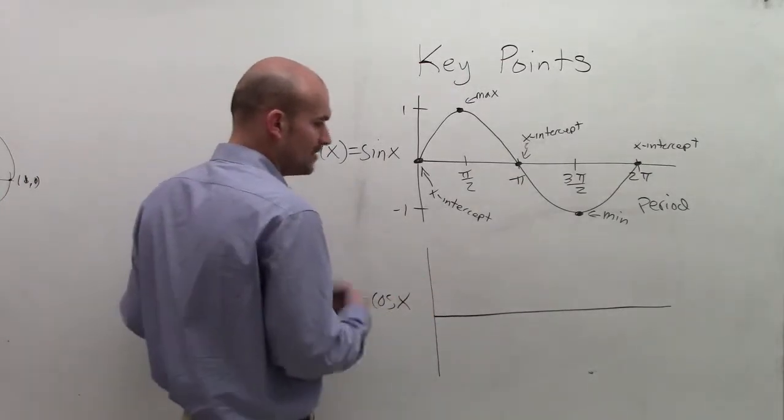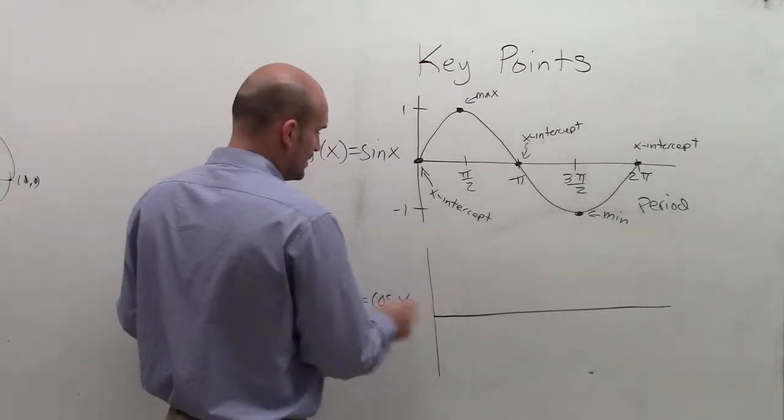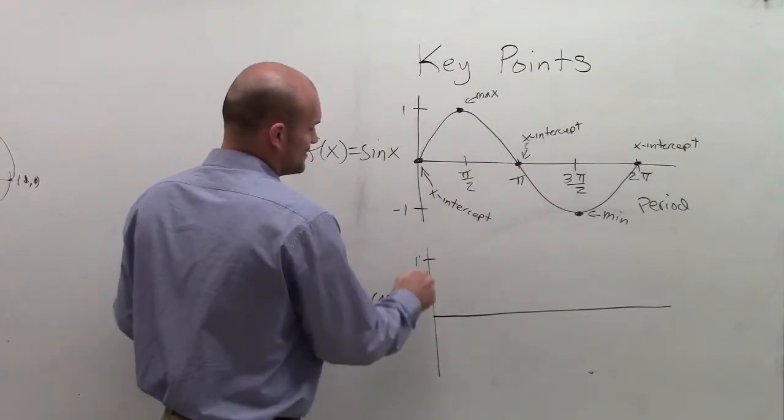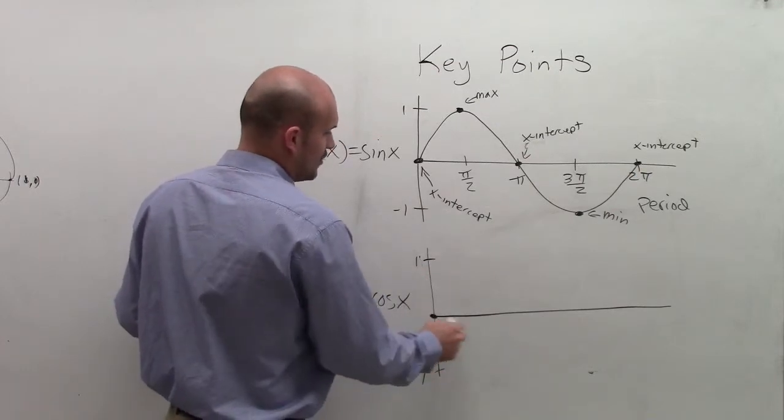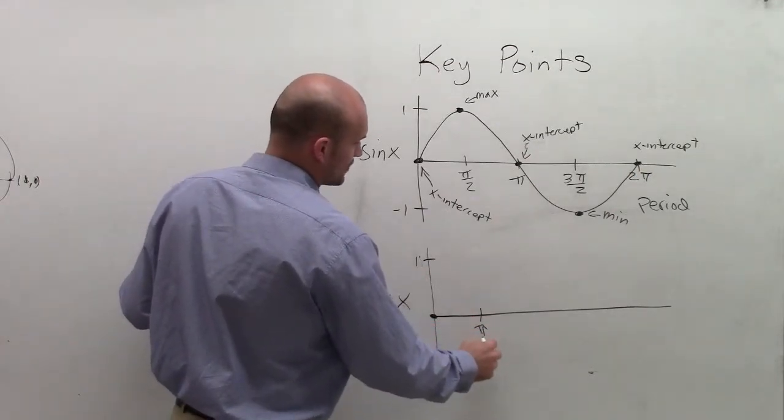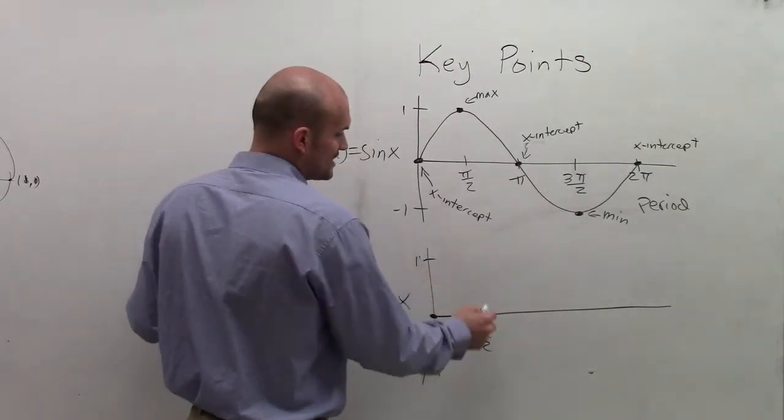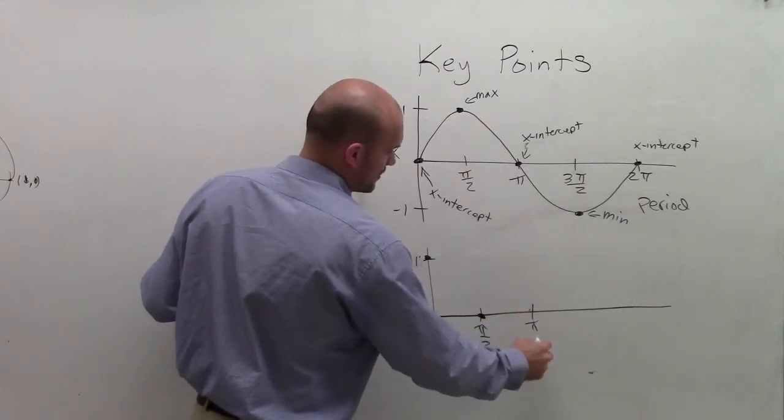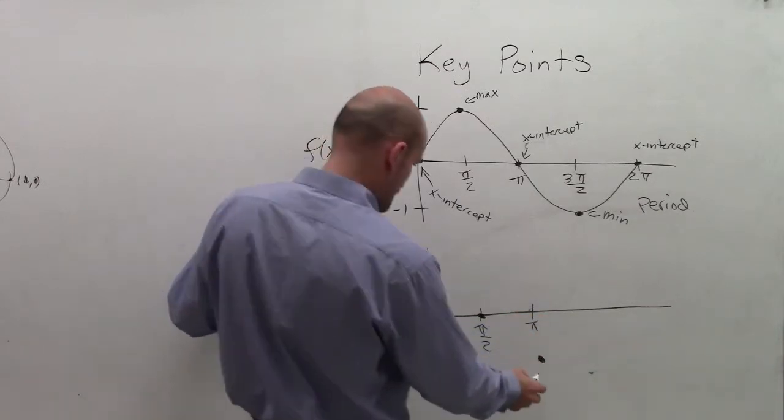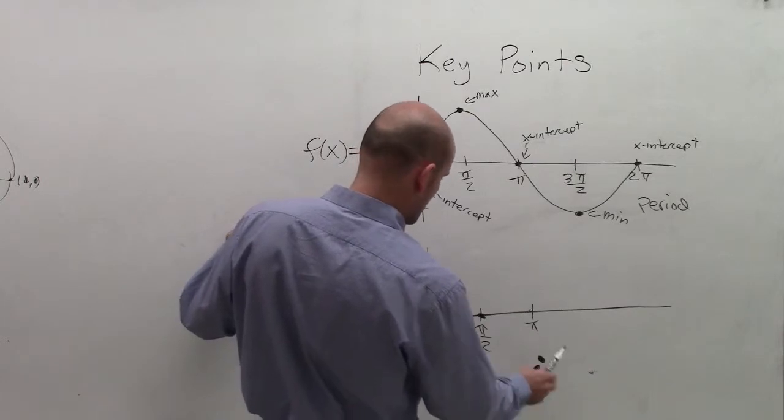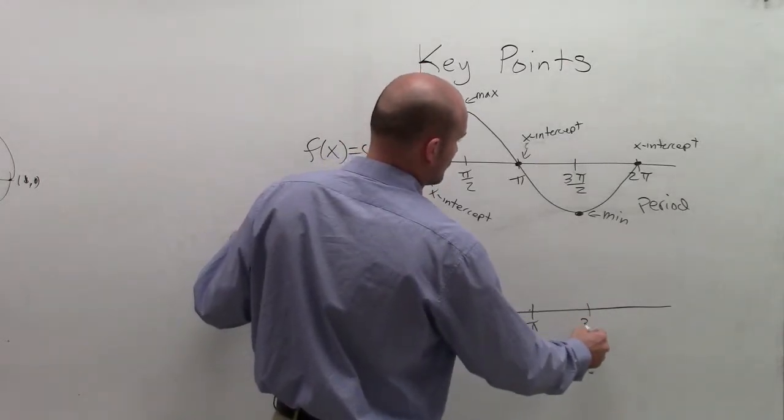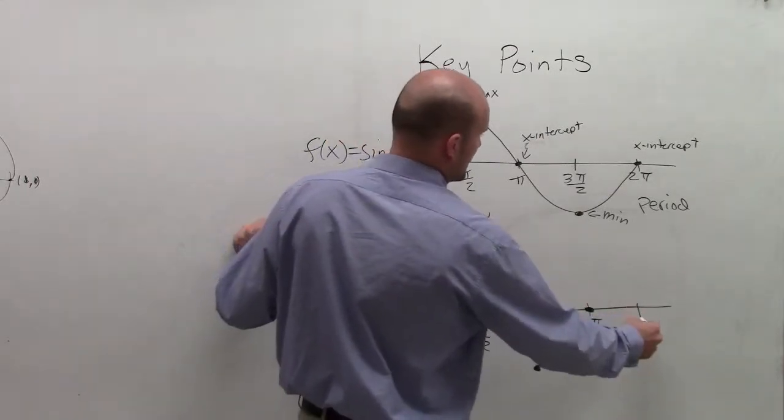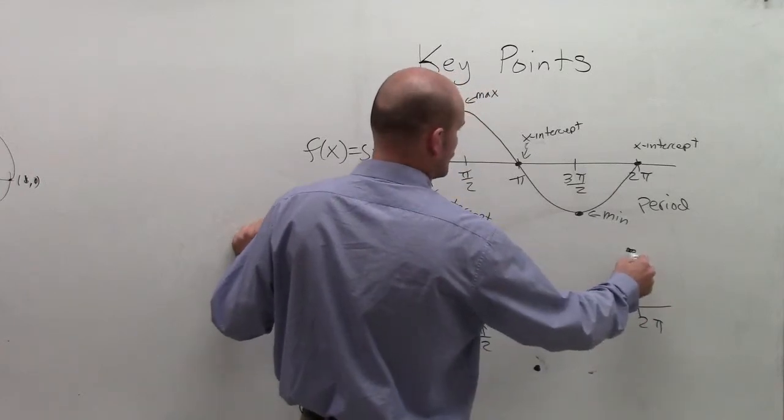Now for the cosine graph, it's a little bit different but very similar. So when cosine of x equals 0, we actually start off at 1. Then at π/2, the cosine of π/2 is actually going down to 0. Then the cosine of π goes down to negative 1. Then we look at the cosine of 3π/2 goes back up to 0, and the cosine at 2π goes back up to 1.